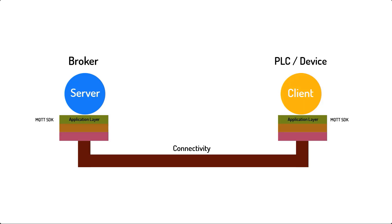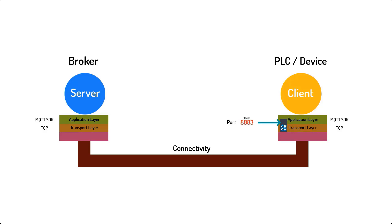We'll discuss what an MQTT packet looks like shortly. If this were an HTTP-based communication network, this is the layer that would be responsible for creating HTTP packets. The second layer is also a software entity that resides on your PLC. Conceptually, it is called the transport layer. Its job is to accept an MQTT packet from the application layer through what is called a port. MQTT uses port 1883 for non-secure communication and port 8883 for secure communications.